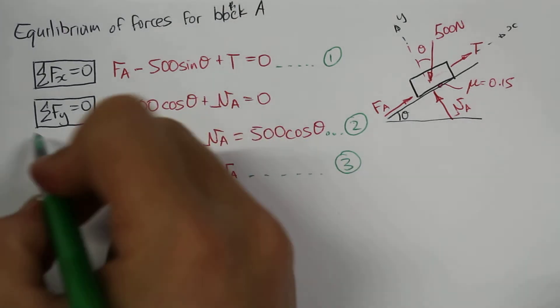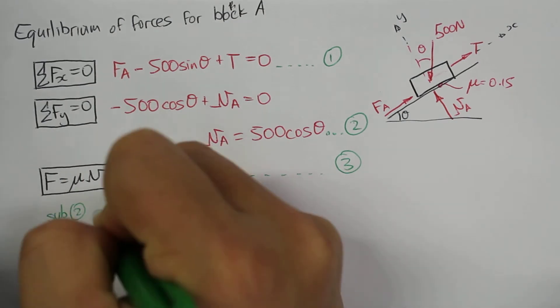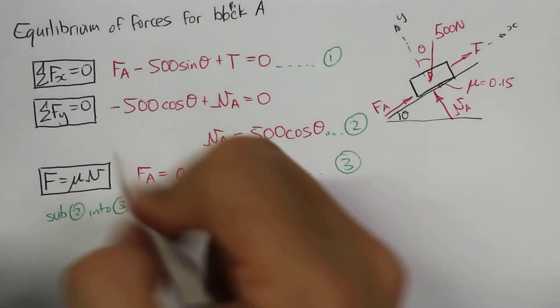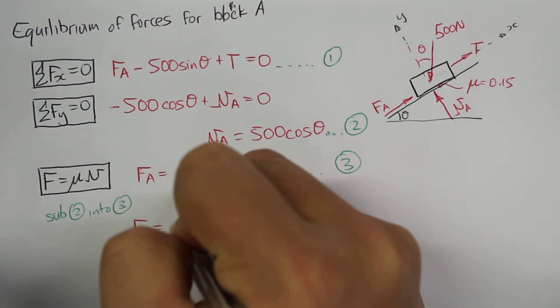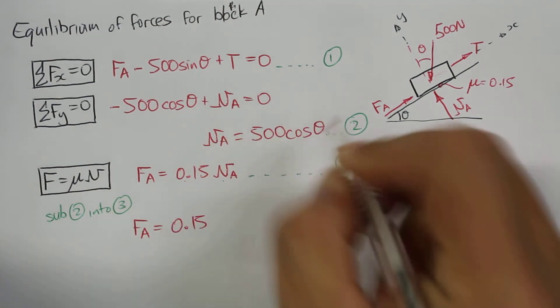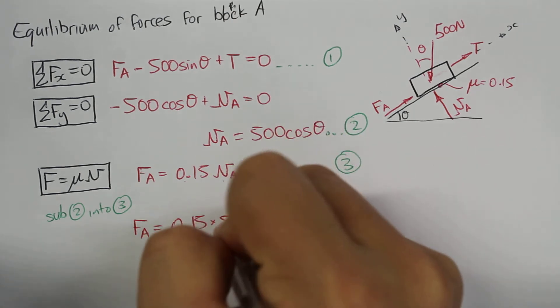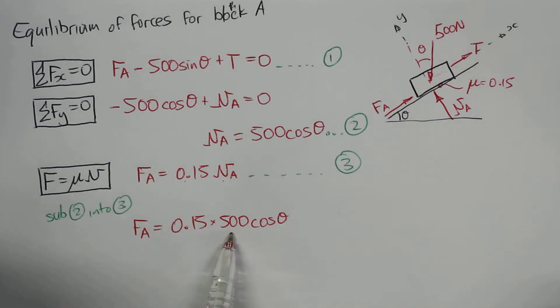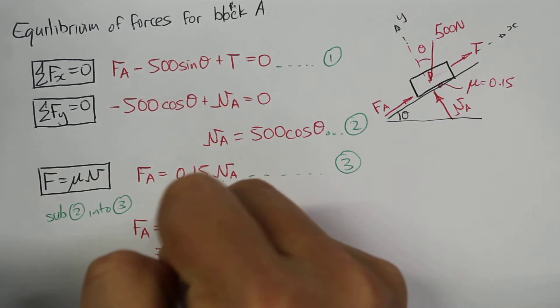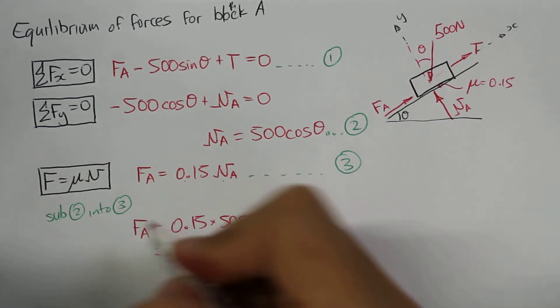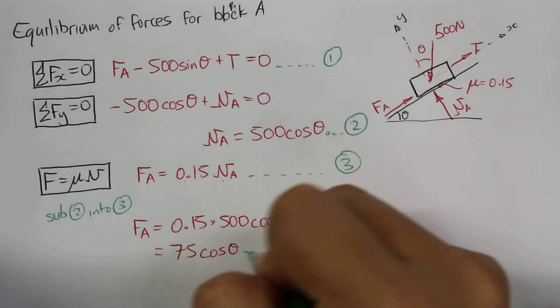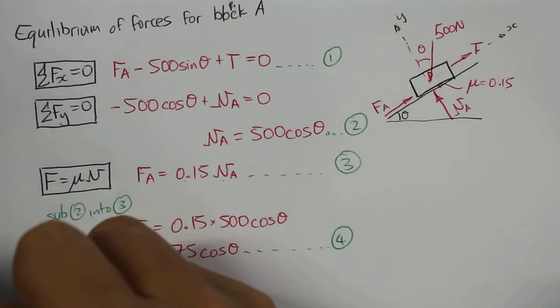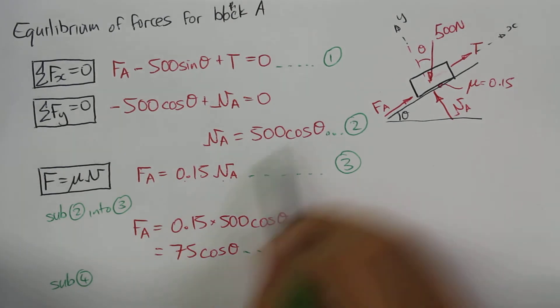If we put equation number 2 into equation number 3, we get FA equal to 0.15 times Na. Na is equal to 500 times cosine theta. 0.15 times 500, we get 75. So this is 75 times cosine theta. We can call that equation number 4.